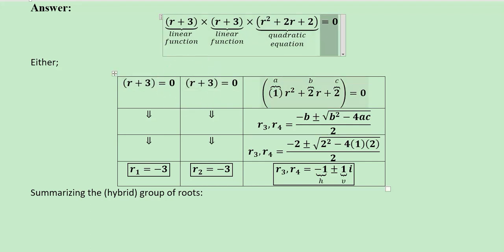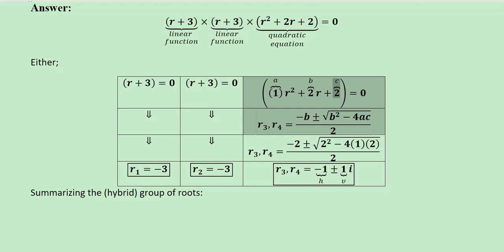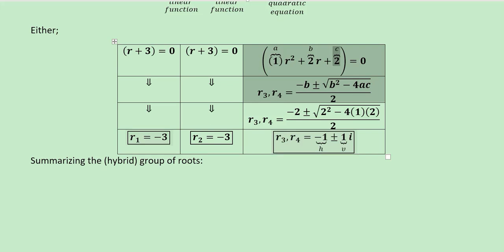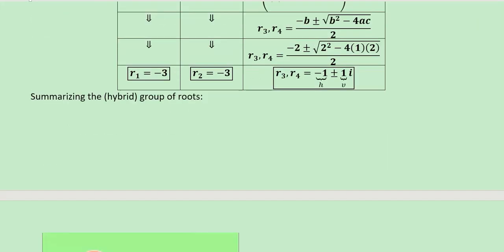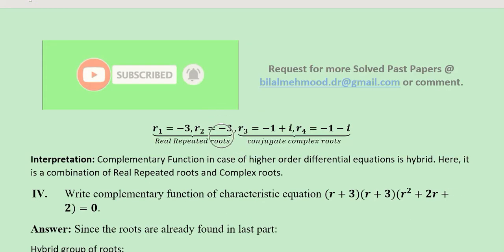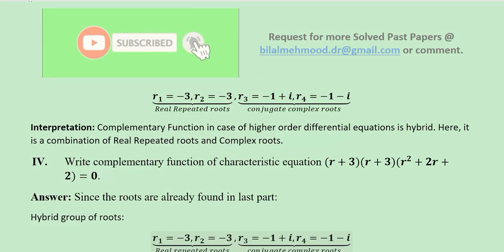Setting r plus 3 equal to zero gives us minus 3 in both the first and second roots — these are real repeated roots. The third factor is quadratic, so we apply the quadratic formula, giving us the third and fourth roots which form a conjugate complex root pair. This is a hybrid case because two types of roots appear: real repeated roots and conjugate complex roots.